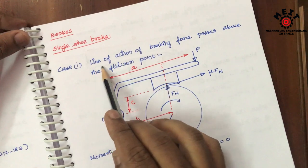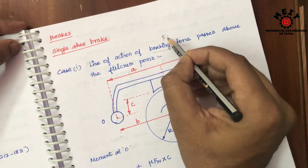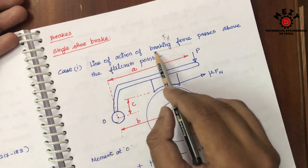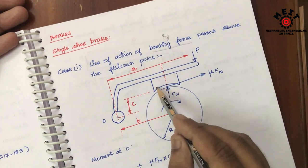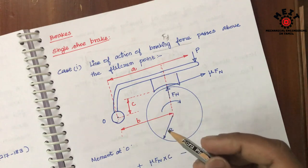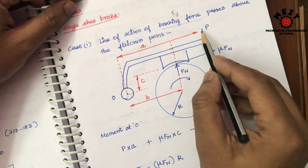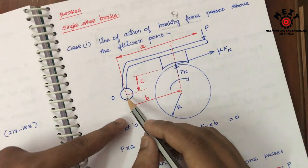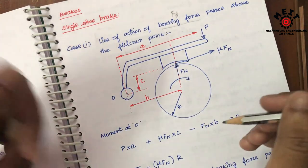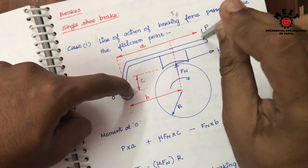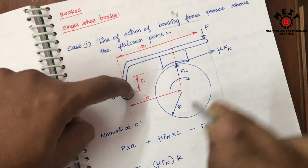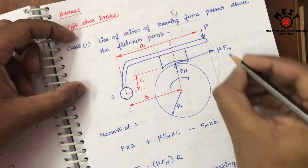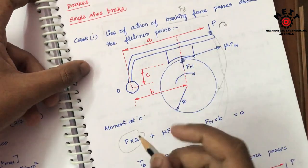The first case: the line of action of braking force passes above the fulcrum point. The friction force makes the drum stop — that is the braking force. It will create a clockwise moment. In the moment equation, P into A (distance A) is clockwise, so it is positive.